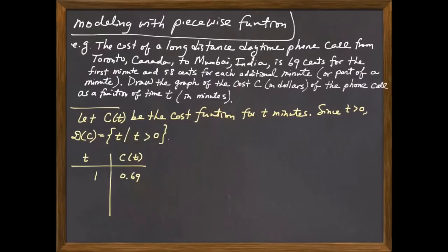But what about if you just make a call for 30 seconds? How much do you pay? Well, the 30 seconds is still within that first minute of call time, which means you should also pay 69 cents for that. And what about zero? If you didn't call at all, well, if you didn't call, then you wouldn't pay anything. But if you just call for one second, how much would you pay? Well, you still pay 69 cents for that. What it means is that as long as the t value is less than or equal to one, you would pay 69 cents for that.